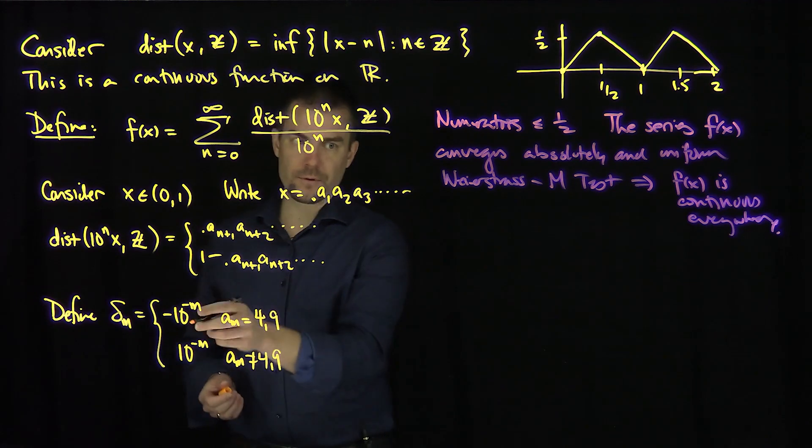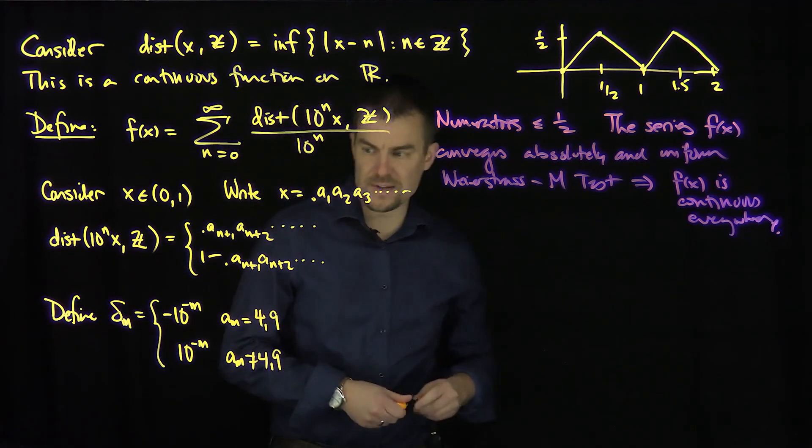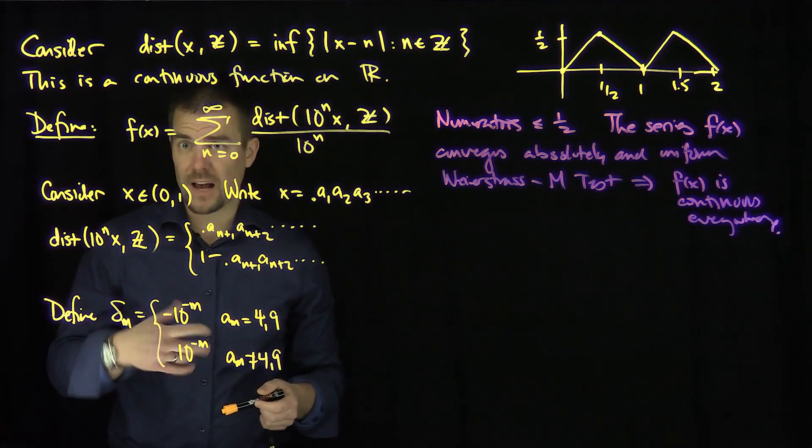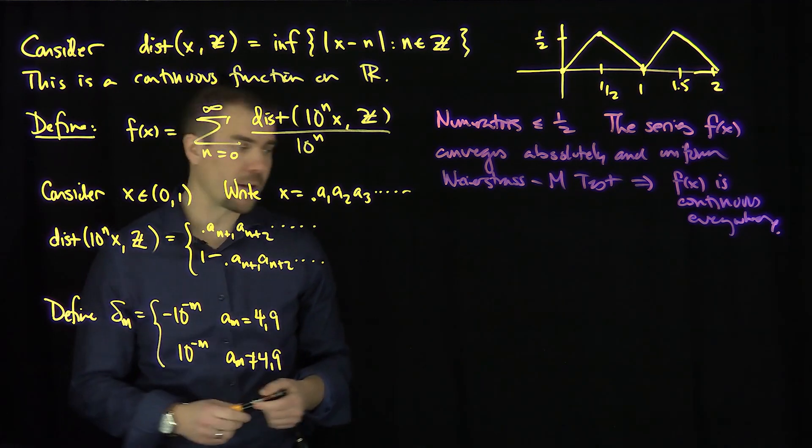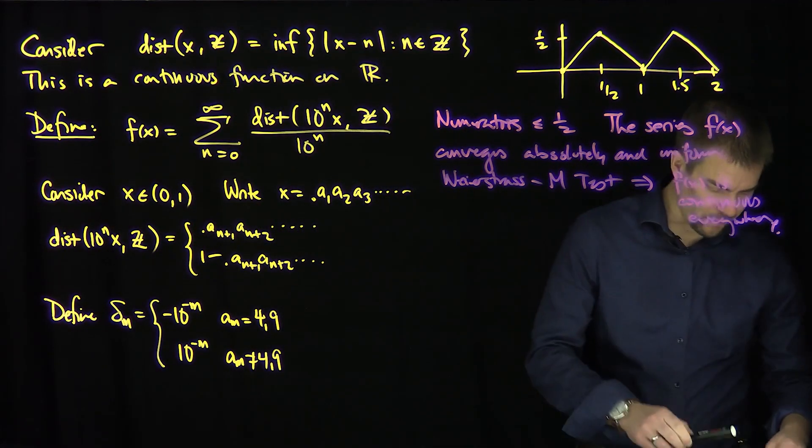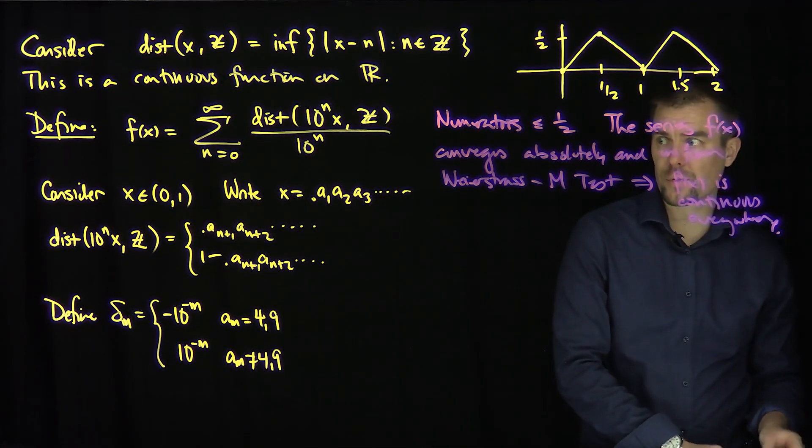So what we're going to do now is we're going to consider the difference quotient with this delta_m sequence. Now it's easy to verify that delta_m is going to zero as m goes to infinity. So now let's look at our difference quotient.